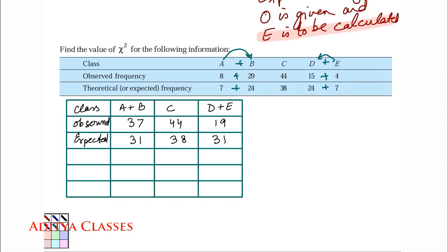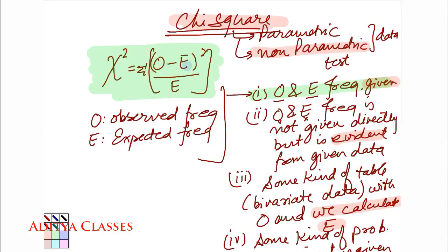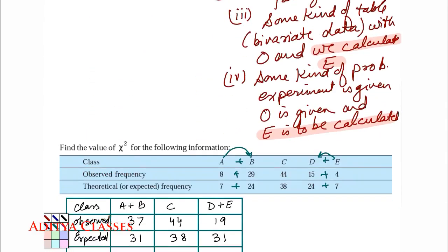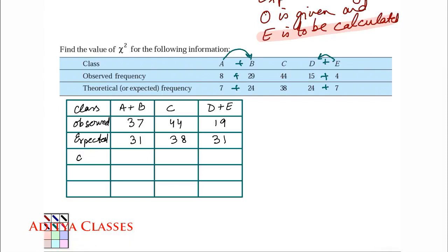So here are observed and expected frequencies after certain modifications. Because chi-square needs to have all frequencies above 10, and certain frequencies are falling down. So I combined their nearby categories. I combined A and B and I combined D and E. So here is our table. Now what we need is O minus E. Then a square of O minus E. Then that thing will be divided by E.